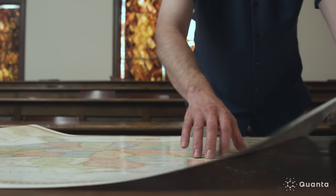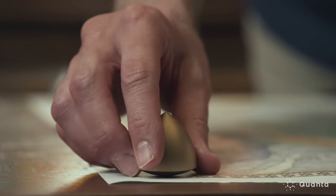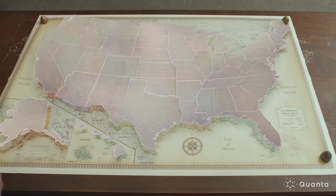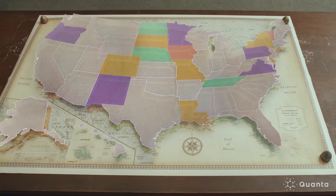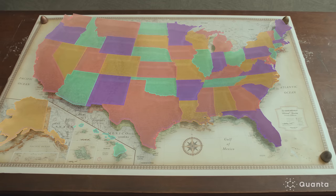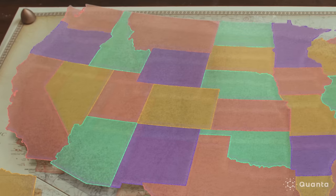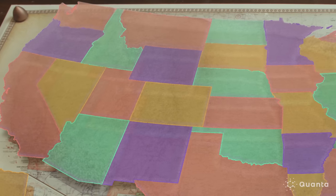Imagine you had a blank map and you're a cartographer and you wanted to color the map. One thing that might be important is that each region have its own color and that no two regions that share a border are the same color. And so the question is, how many colors will you need?